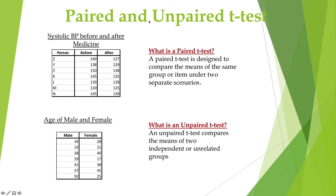What is a paired and unpaired test? A paired test is designed to compare the mean of the same group or item under two separate conditions. For example, person Z had a blood pressure of 140 before taking the medicine and 127 after taking the medicine — this kind of data is called paired data. An unpaired test compares the mean of two independent or unrelated groups, such as the age of men and women. They are all independent, and this kind of data is called unpaired data.